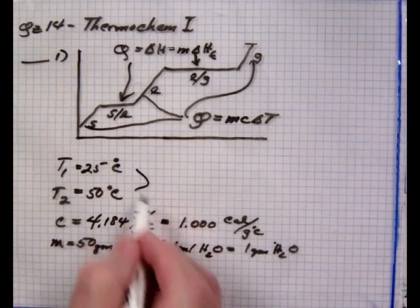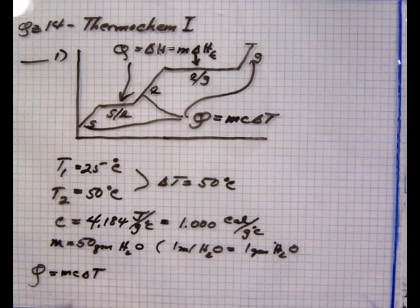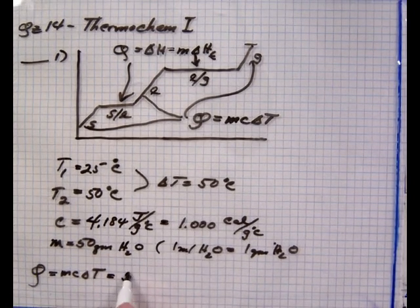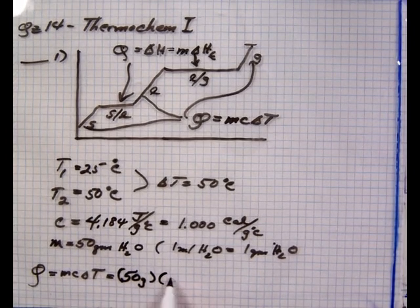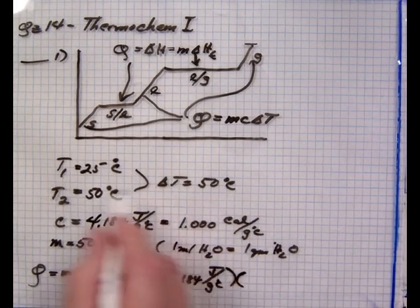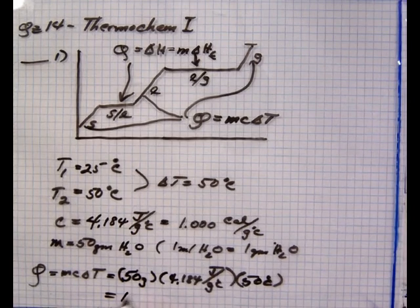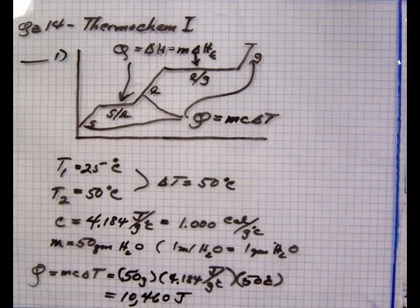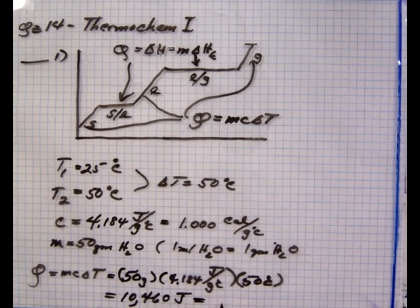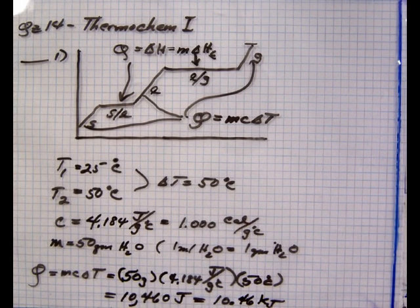We got MC delta T. The delta T is 50 degrees C. So now we can set up the calculation: 50 grams times 4.184 joules per gram degree Celsius, times the temperature change which is 50 degrees Celsius. That comes out to 10,460 joules. If you needed to determine that in kilojoules, simply divide by 1,000, move your decimal three places to the left: 10.46 kilojoules.